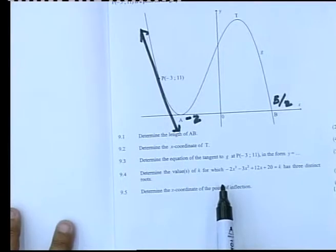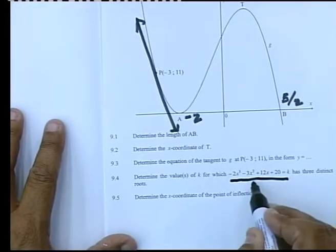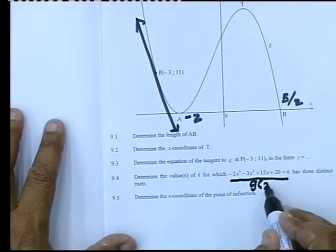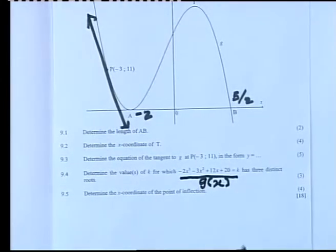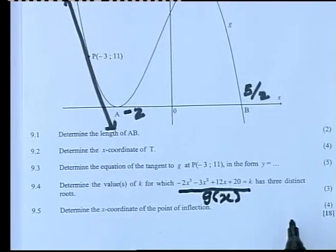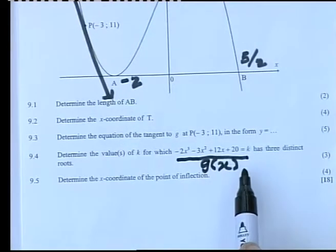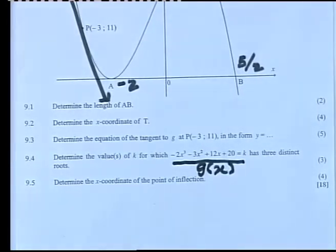In 9.4, we are now asked to determine the values for k, for which the given equation—so let's immediately look at that part over there. They're telling me that g of x is equal to k, and you need to find the value of k so that this equation with k in it has three distinct or three different roots.